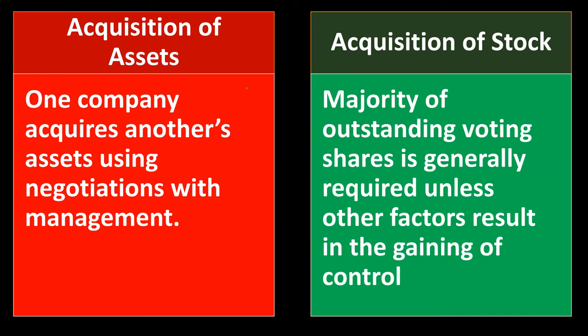A majority of outstanding voting shares is generally required for stock acquisition unless other factors result in gaining control — typically 51% and above. There are pros and cons to this method: it might be easier to execute than going line by line on assets, but you could be stuck taking on things you don't want, such as contracts, contingent liabilities, and similar obligations of the company being purchased. Either method has its pros and cons.